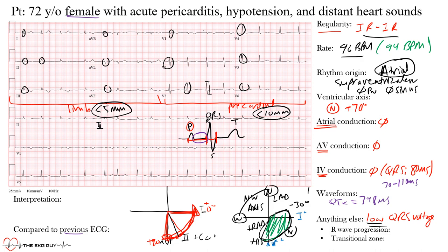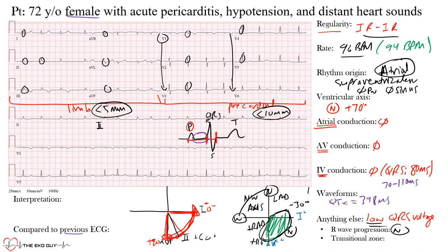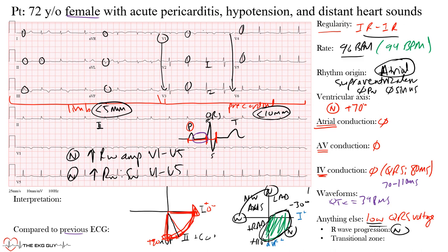R wave progression refers to R wave amplitude as we go across the precordial leads from V1 to V6. We should see an increase in R wave amplitude — barely visible in V1, then growing through V5. From V1 to V5 here, that's normal R wave progression. You can also assess the R-to-S wave ratio, which should increase from V1 to V5 — and notice the S waves are getting smaller as we progress leftward, producing a bigger R wave.